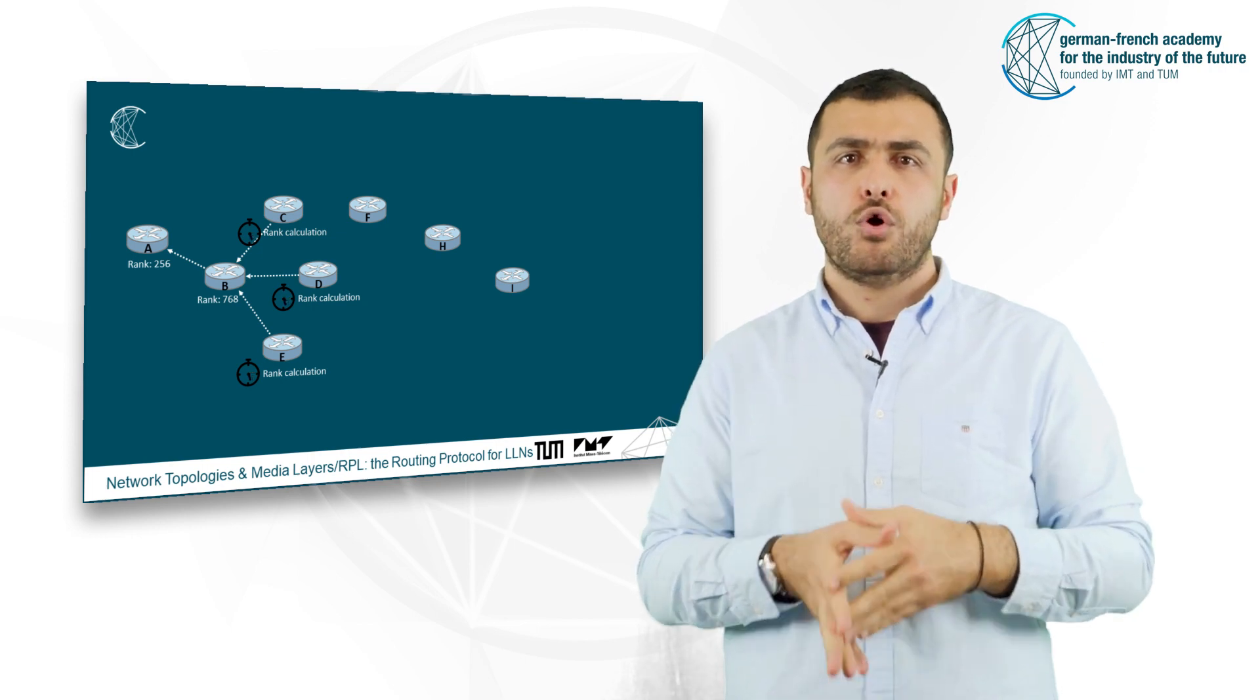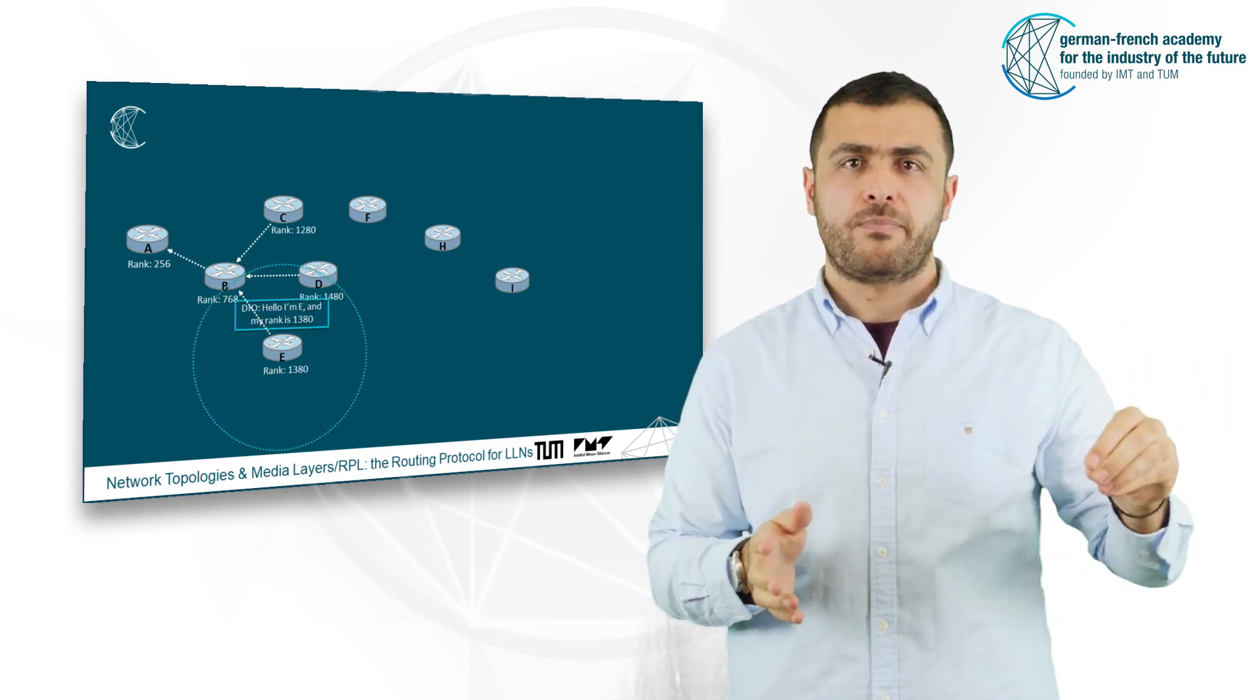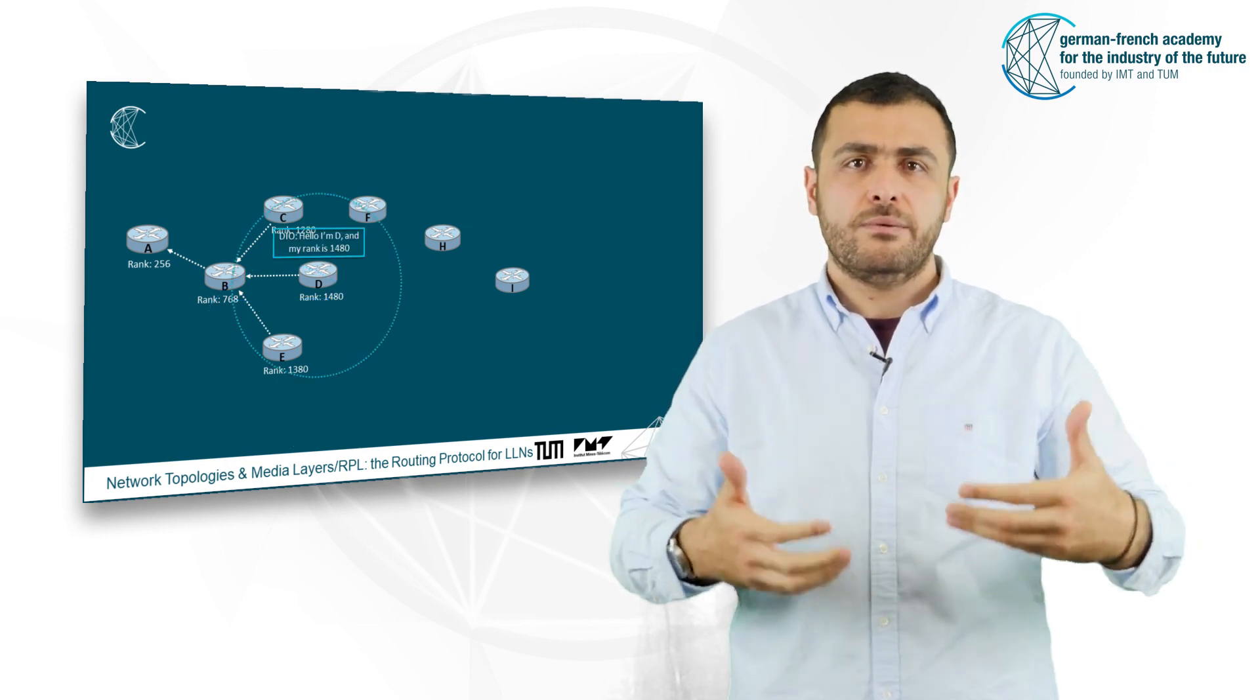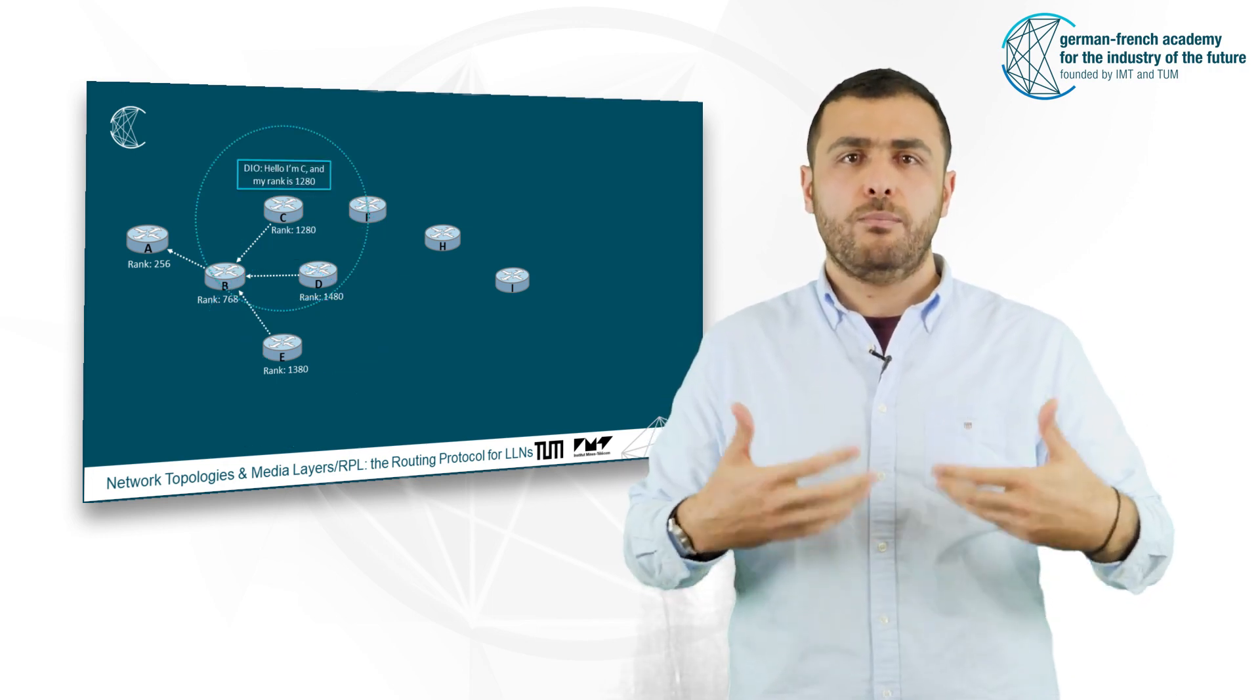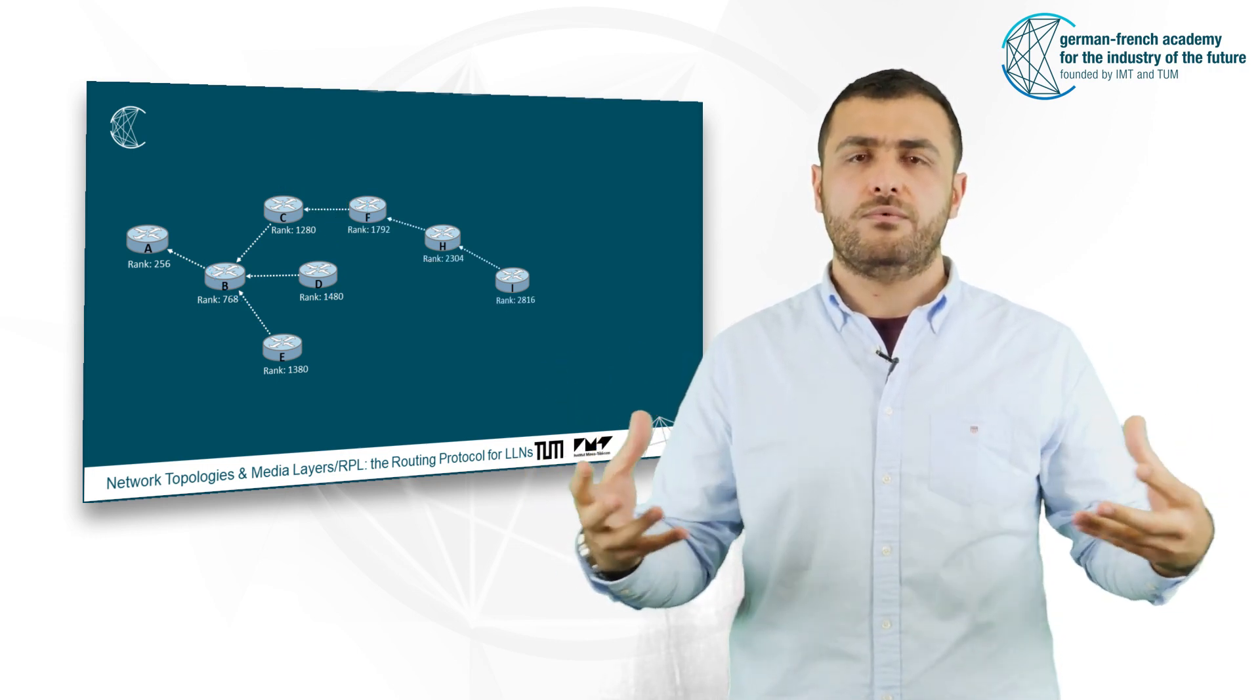More specifically, they will compute their own rank based on the rank of the node B. And then, they will start sending periodically DIO control packets as well. This process will continue throughout the lifetime of the network.